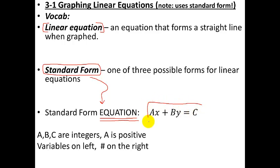So Ax + By = C is the equation for standard form. Now the numbers, or the letters A, B, and C, they stand for numbers, so they're not variables, they are representing numbers, and more importantly they have to be integers, which means they can't be fractions and they cannot be decimals.